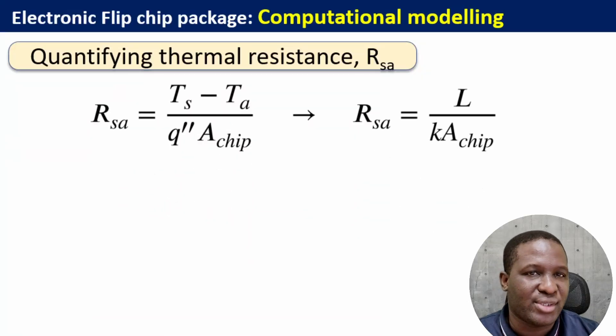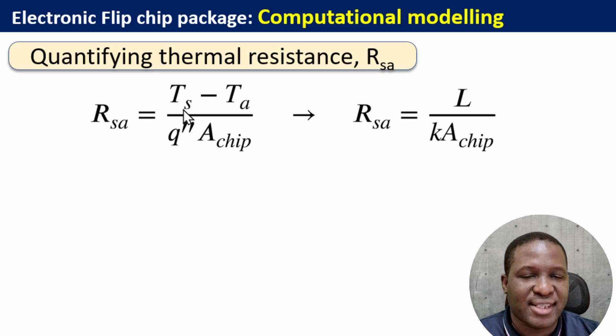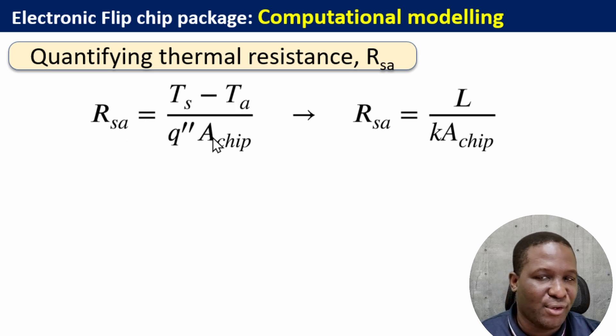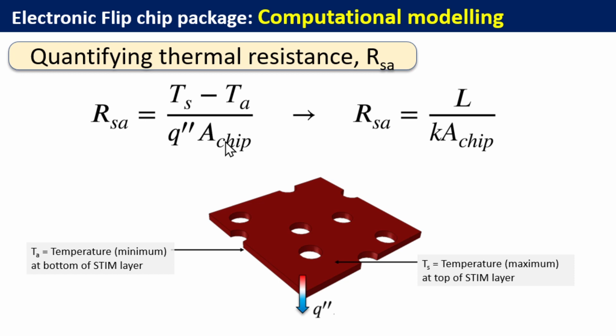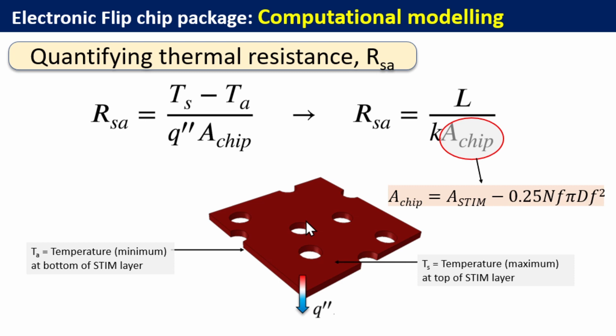The final thing we need to do to understand the effectiveness of the solder layer is to quantify the thermal resistance associated with it. There is a formula for calculating this: the thermal resistance R_SA equals the temperature at the source minus the temperature in the ambient, divided by the heat flux times the area of the chip. The area of the silicon chip is basically the area of the solder layer minus 0.25 times N_F times pi times D_F squared. We're going to go into Abacus and I can show you how this modeling can be carried out.